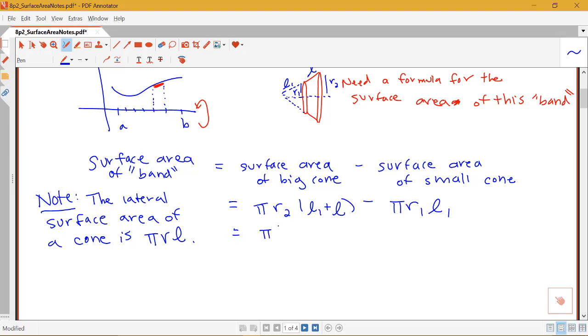So if I factor π out of here, I'm going to have π times R2L plus R2L1 minus R1L1 here. So what else can we do with this? Well, notice that each of these two terms has L1 in it. So I'm going to call this R2L plus L1 times R2 minus R1.